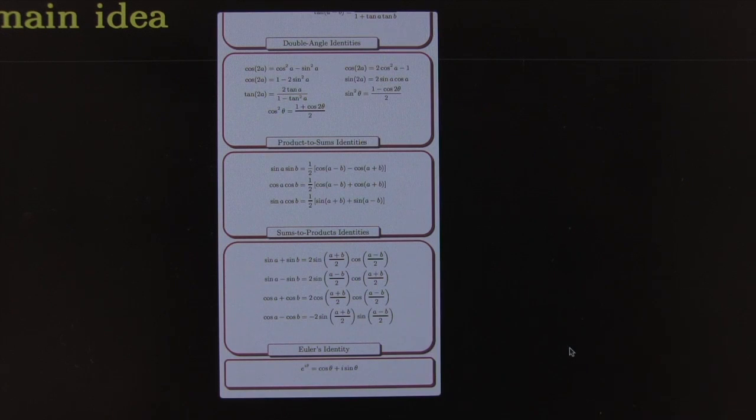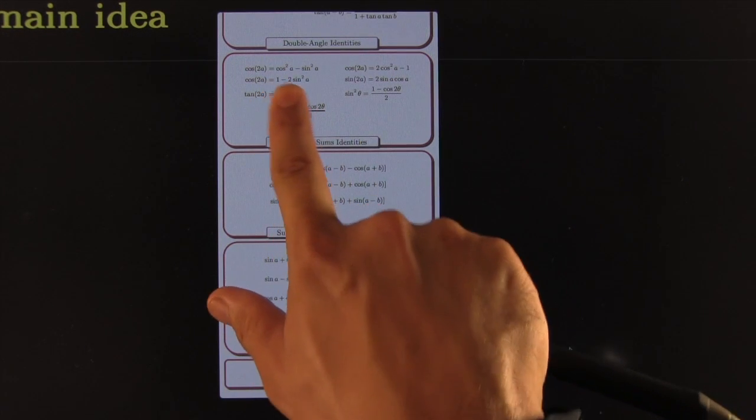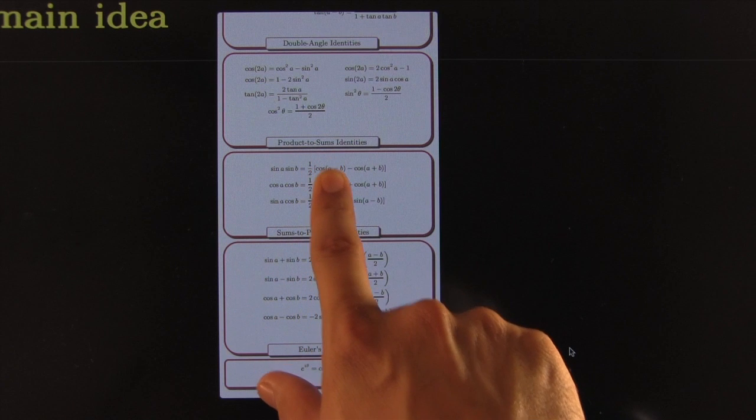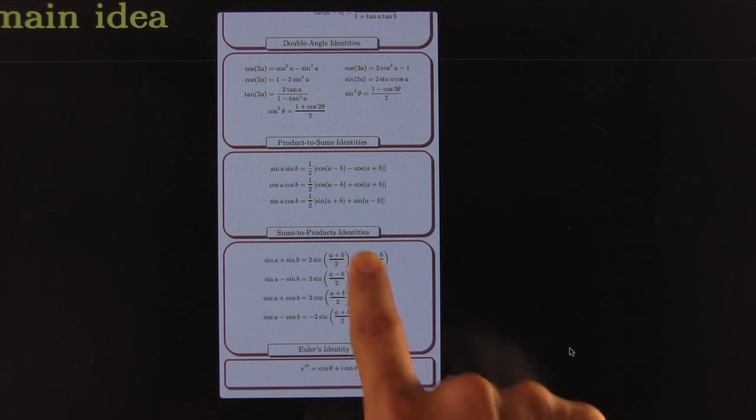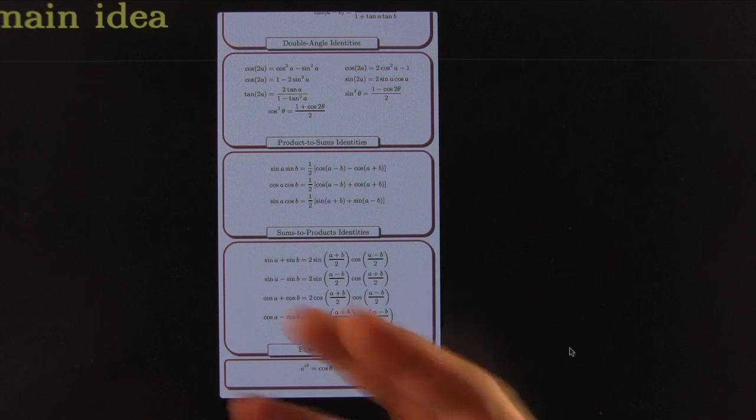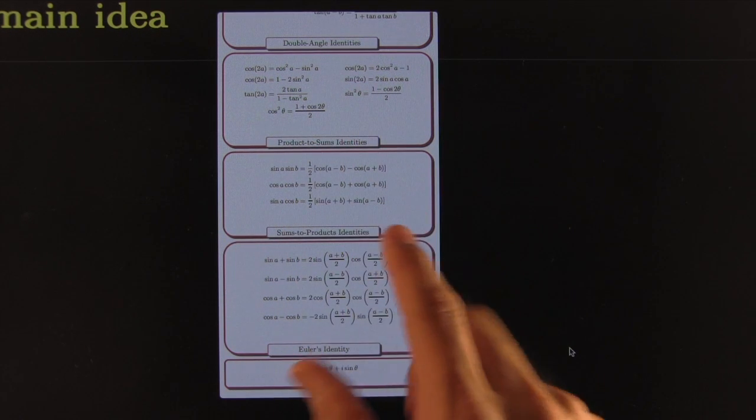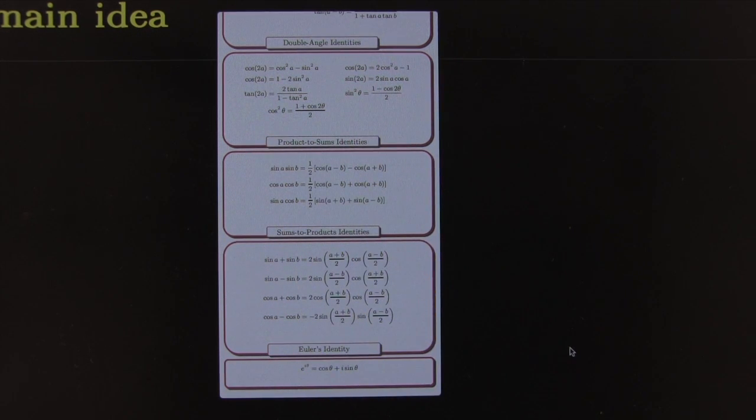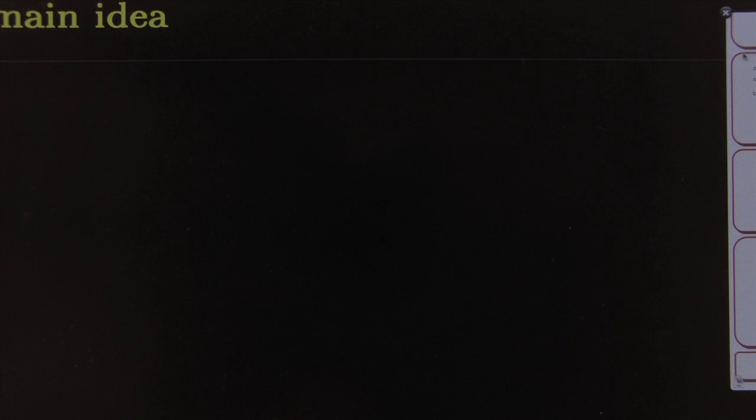Back when you were in trig, you learned double angle identities, products to sums, sums to products identities, and a whole bunch of other ones. The point is to be comfortable using these so that you can tweak integrals into something that is easier to integrate. That's basically the gist of it.